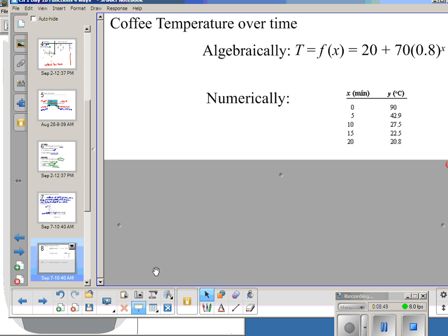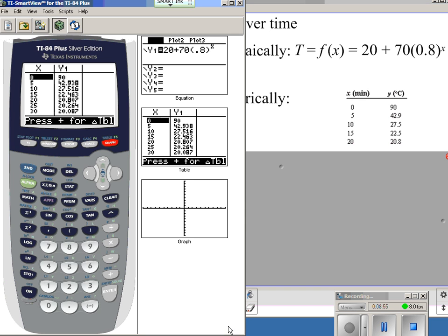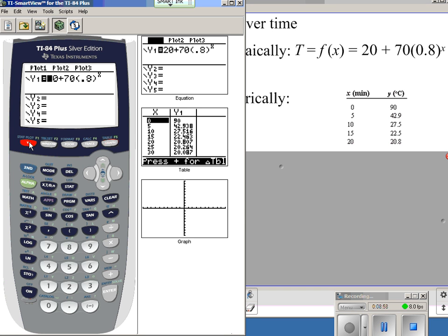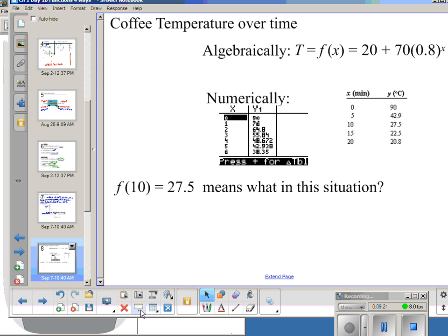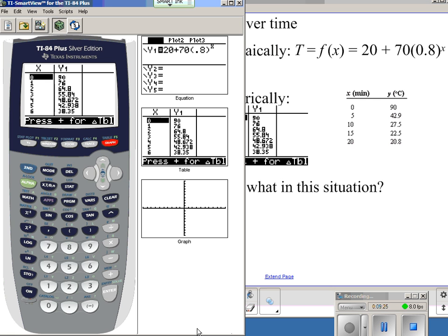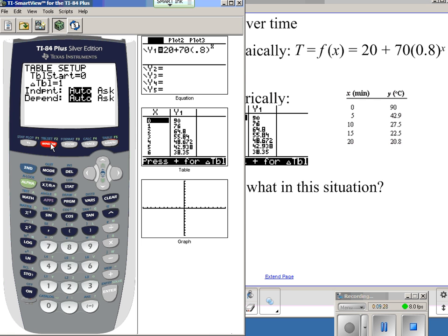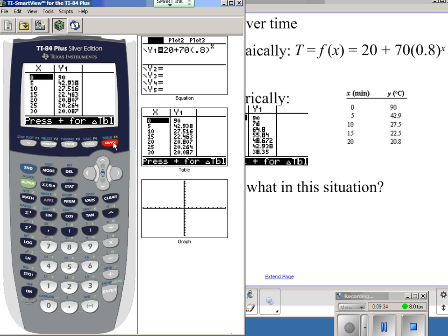We can also look at this same thing algebraically and numerically. So, here's an equation that models this. If I type in my equation in my y equals, it would give me that same graph. And I can look at my table. I can do my table set. I could look at it every one minute and see what kind of table I get if I do second graph, which is my table. So, every one minute, my temperature is 90 and then 76 and then 64. Or, you could go up by fives. You can go up by five.